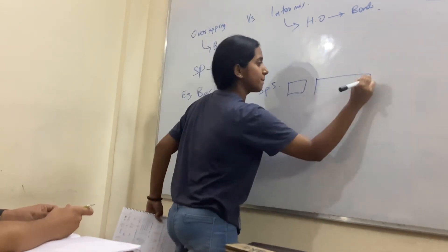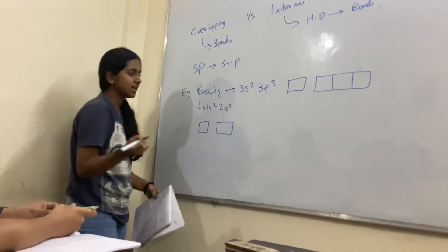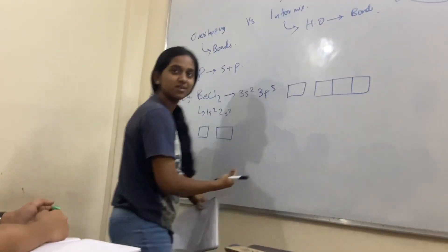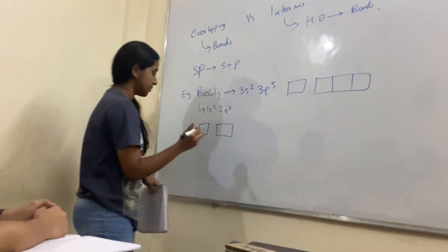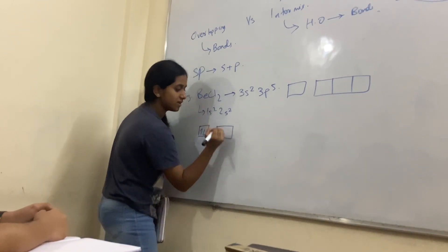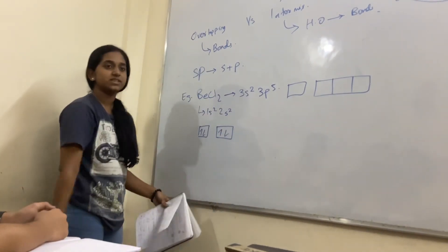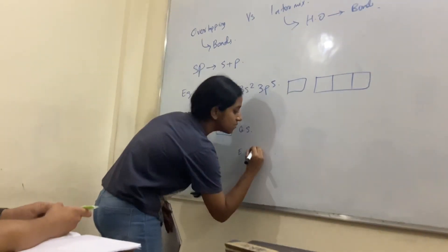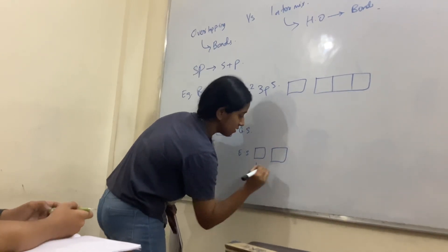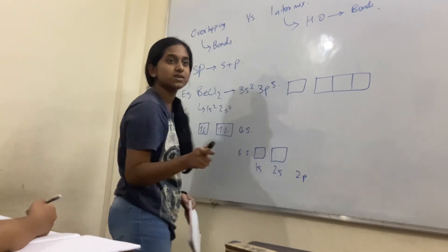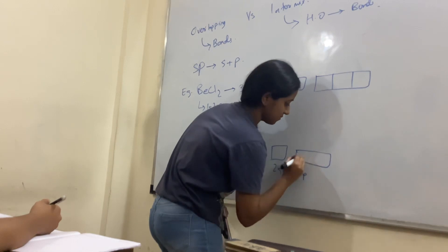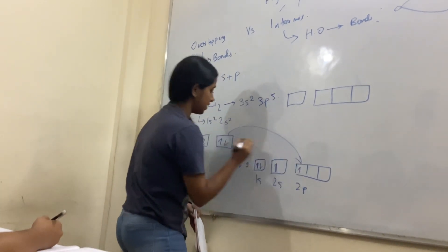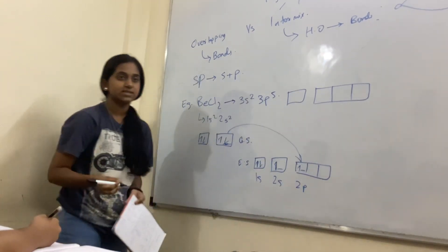Here is the P orbital. These two electrons need to go to the excited state. Here, P orbital is introduced. This is 2s, and here are the orbitals. Now it needs electrons to fulfill its configuration.